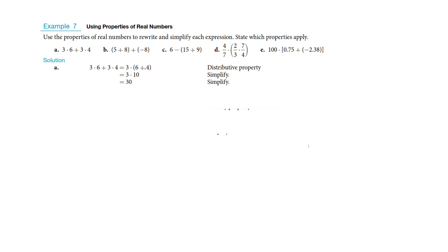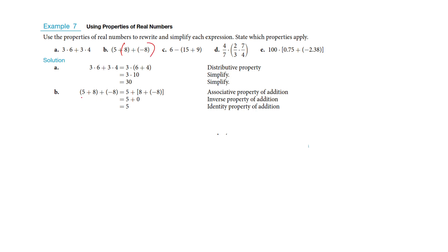They did the parentheses and multiplied it down to get 30. In the second example, what they've done is changed who they were associating. Instead of doing the 5 and 8 first and then taking away 8, these are opposites — I have the additive inverse property here. 8 and negative 8 are opposites of each other, so if I associated them first, I would create 0, and then the problem would be much easier to solve.